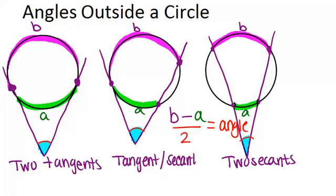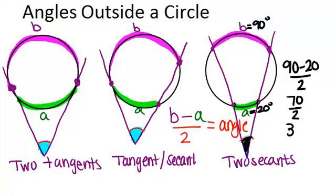So for example, if the bigger arc was 90 degrees and the smaller arc was 20 degrees, and you wanted to figure out the measure of this angle down here, what you would do is 90 minus 20 divided by 2. And 90 minus 20 is 70, and 70 divided by 2 is 35. So that means this angle would be 35 degrees.